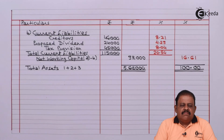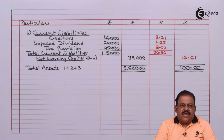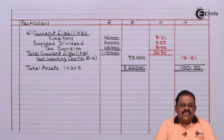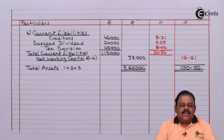Thus, we have completed the common size balance sheet. We are required to remember one rule: while preparing a common size balance sheet, total capital employed as well as total assets must be taken as equal to 100, and accordingly all values are converted into percentages. Thanks for watching this video. Stay tuned with Ikeda and subscribe to our channel Ikeda. Thank you.